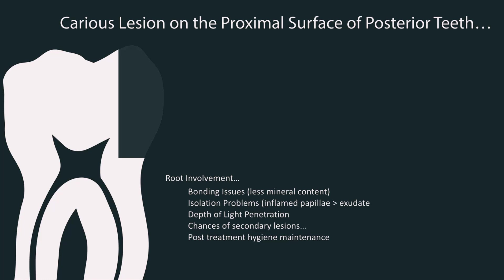There will also be isolation problems, because whenever there is a class II lesion, depending on the size, there are some inflamed papilla interdentally. These inflamed papilla produce inflammatory exudate, which can interfere with the etched or newly prepared surface.